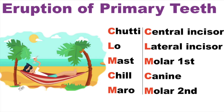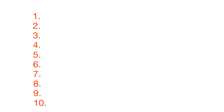You must be familiar with the line-drawn method, but I found a different way to remember. Just write down 1 to 10, then write mandible on the topmost portion and maxilla at the bottom. Now all we have to do is fill the remaining eight numbers with mandible and maxilla in an alternate fashion.